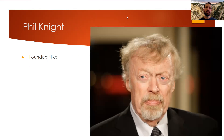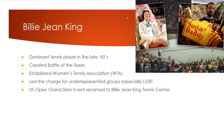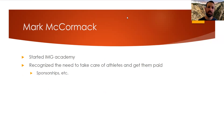Phil Knight founded Nike, which is the biggest sport apparel and sporting brand out there right now in clothing, apparel, and equipment. Billie Jean King was a dominant tennis player in the late 60s who created the Battle of the Sexes and was very instrumental in leading the charge for underrepresented groups, including the LGBTQ community. The US Open Grand Slam event was renamed the Billie Jean King Tennis Center. Matt McCormick started IMG Academy and recognized that athletes need to be paid — another big name in sport management.